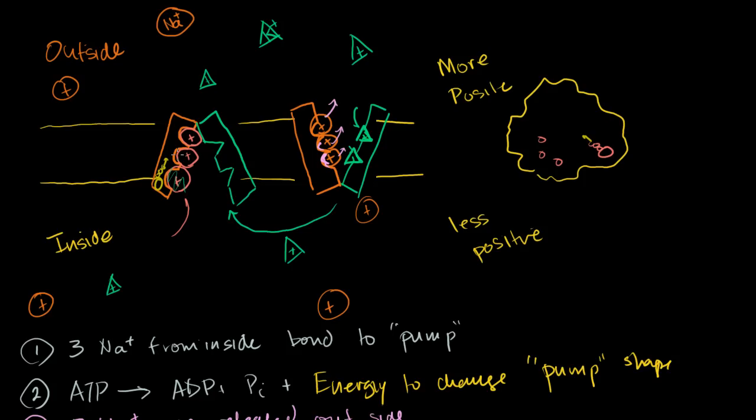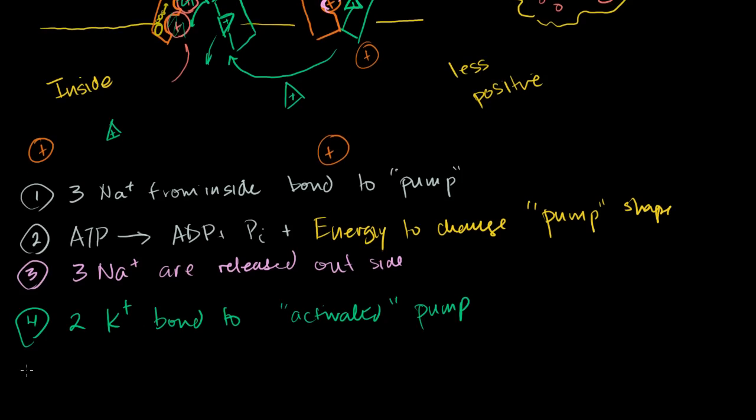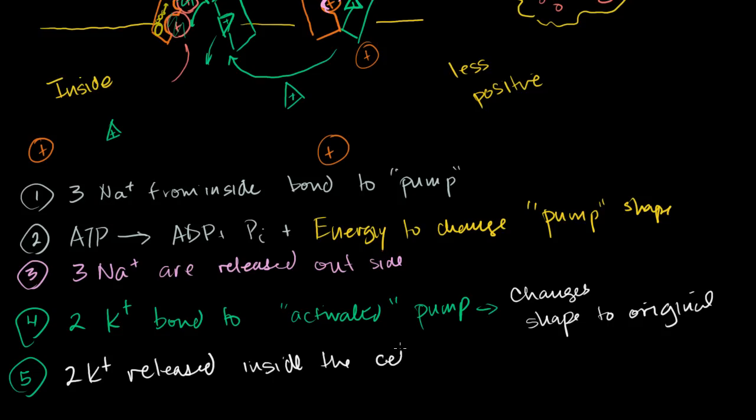When they bond there, it rechanges the shape of this protein back to that open shape. When it goes back to the open shape, we have these two potassium ions sitting here. In this shape, these divots or parts of this cluster of protein are not as good at staying bonded or holding on to these potassiums. So these potassiums get released into the cell. Step five: the pump changes shape to original, and then those two potassium ions are released inside the cell. We're going to see why it's useful to have those sodium ions on the inside. These sodium ions are actually very useful.